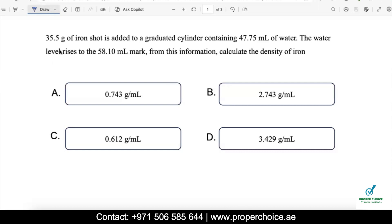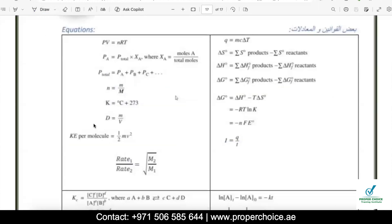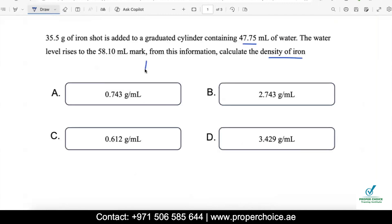Now let's start with the questions here, which are sample questions on MSAT Achieve Chemistry. The first question says 35.5 grams of iron shot is added to a graduated cylinder containing 47.5 milliliters of water. The water level rises to the 58.10 milliliter mark. From this information, calculate the density of iron. The formula for density will be given to us. You can see this is the data sheet available for us to refer. Density is mass by volume, so you can use this formula to calculate the density.